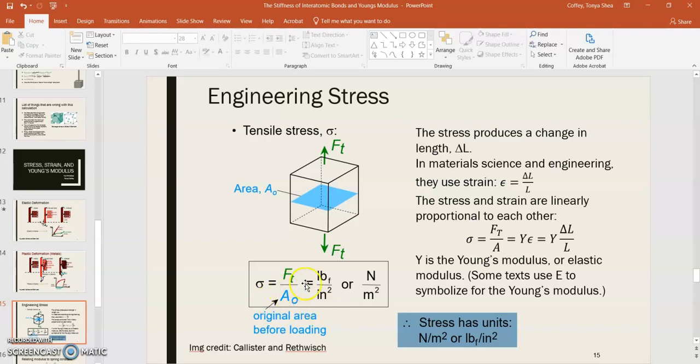Now the SI units for stress, force over area, would be Newton per meter squared, which of course in SI units, one Newton per meter squared is a Pascal. The English units would be pounds per square inches. Force in English units is pounds, and of course the area is usually given in inches squared.